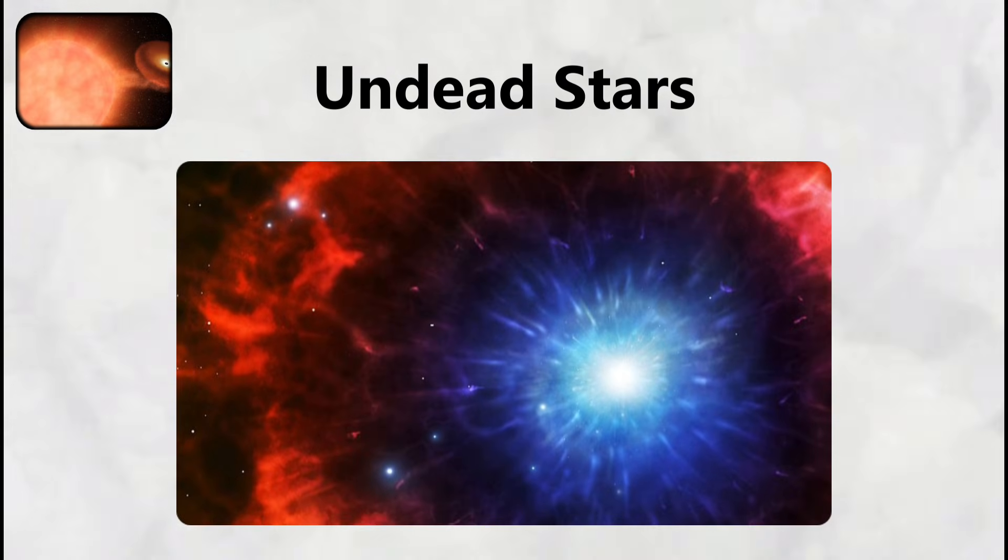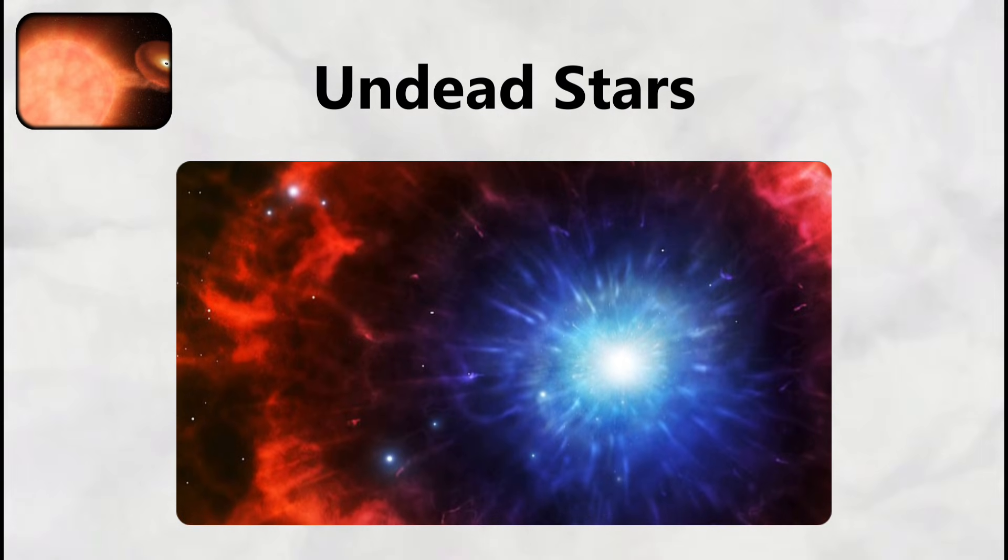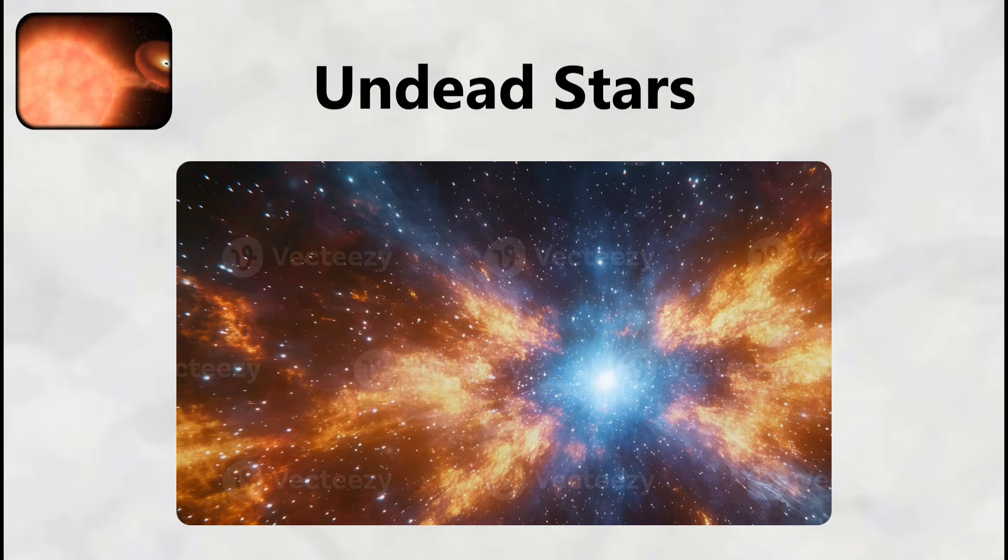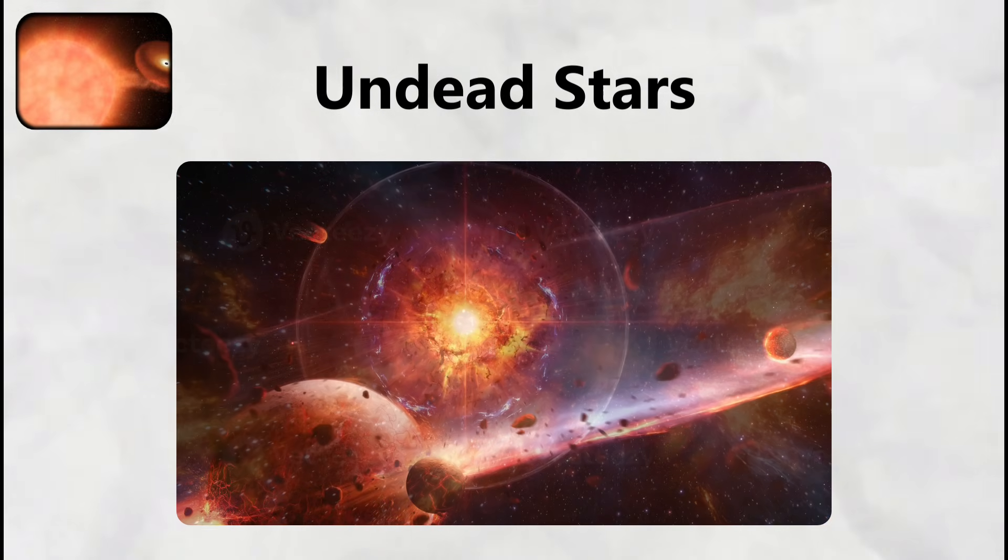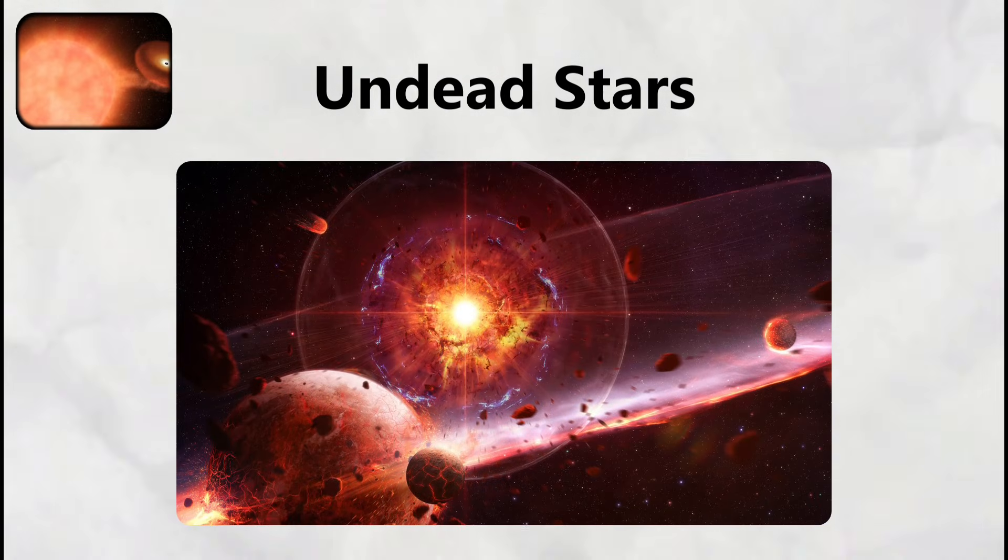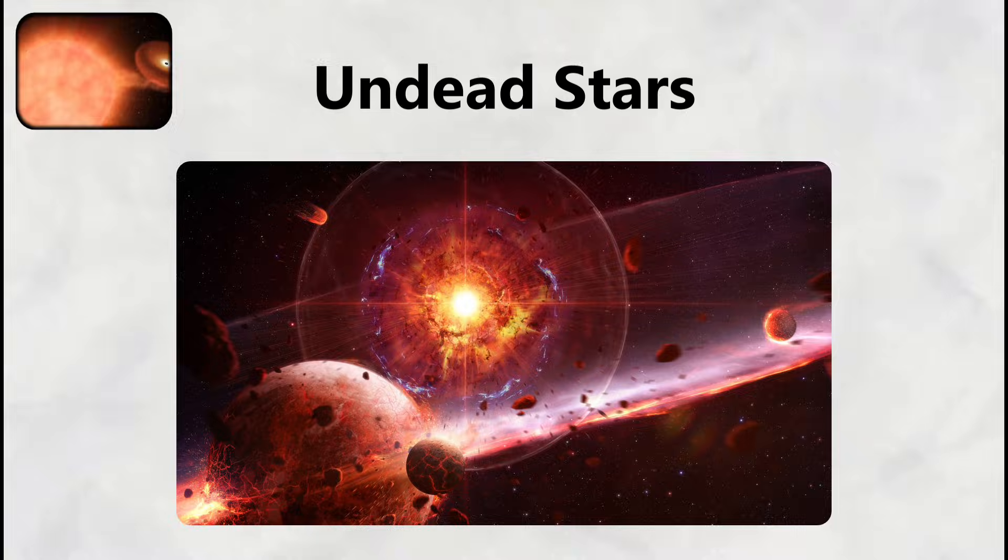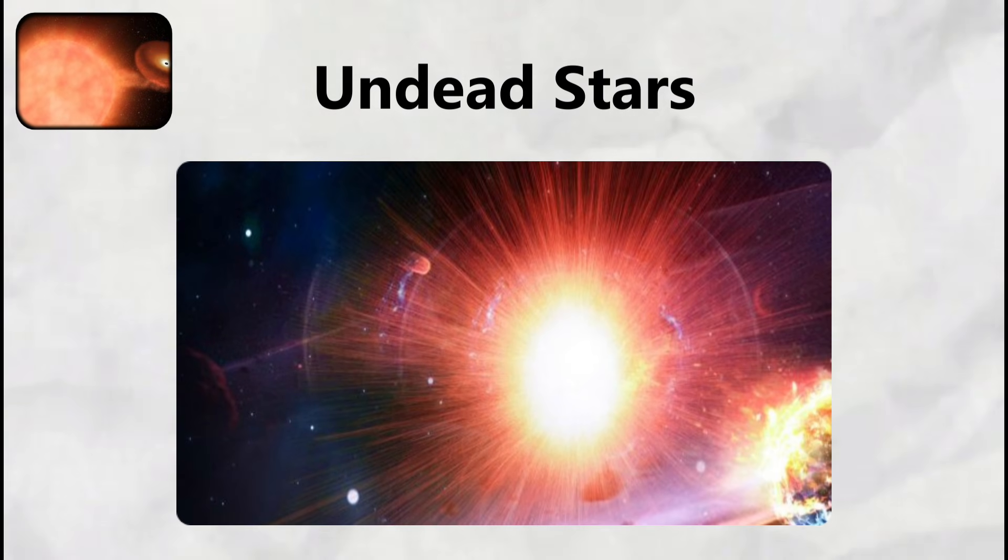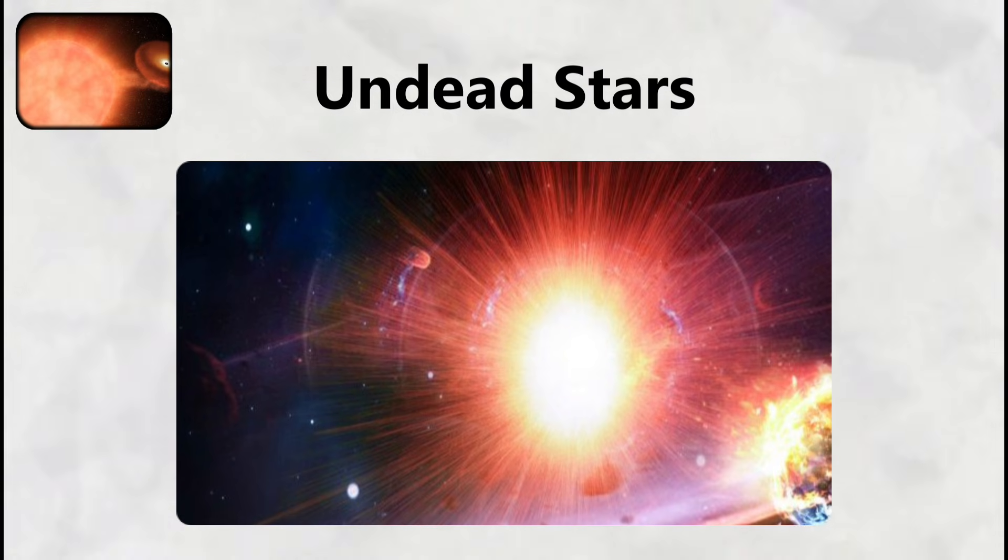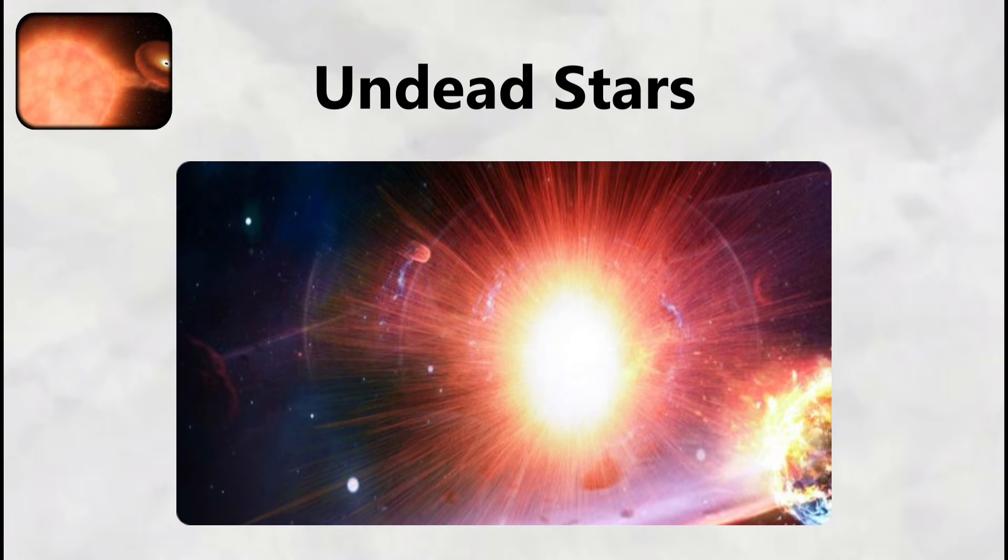What makes zombie stars particularly unsettling is their unpredictability. Astronomers cannot determine when a white dwarf will reach the critical mass needed for detonation, meaning these stellar time bombs could explode without warning after millions of years of apparent dormancy. The explosion completely vaporizes the white dwarf, leaving behind only an expanding shell of radioactive debris traveling at speeds of 10,000 kilometers per second.